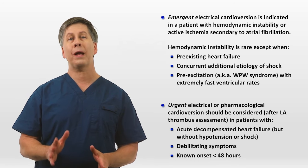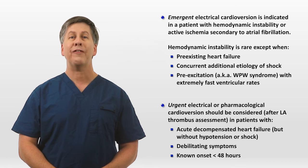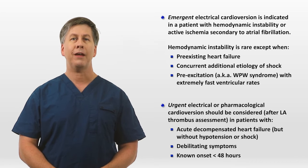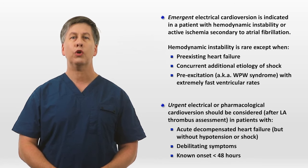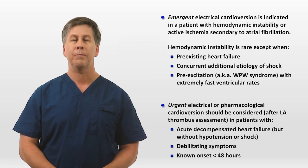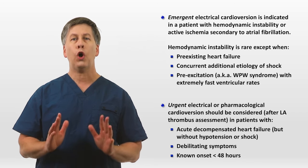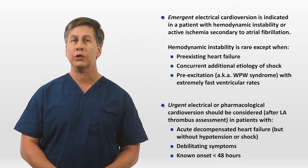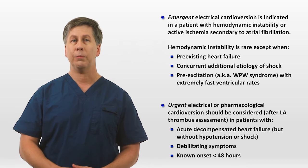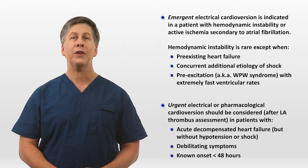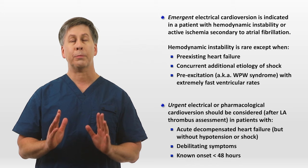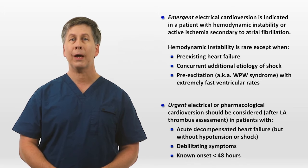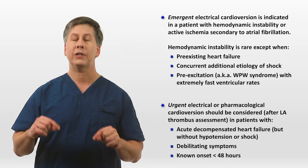A quick word about left atrial thrombus assessment: if a clot has formed in the left atrium while the patient has been in AFib, restoring sinus rhythm carries the risk of embolizing that thrombus, leading to a stroke or other embolic catastrophe. Outside of emergencies, patients should only be cardioverted if the onset was less than 48 hours ago, they've been reliably anticoagulated for at least three weeks, or they first undergo a transesophageal echocardiogram to ensure no clot is present. A transthoracic echocardiogram is not sufficiently sensitive for this particular purpose.